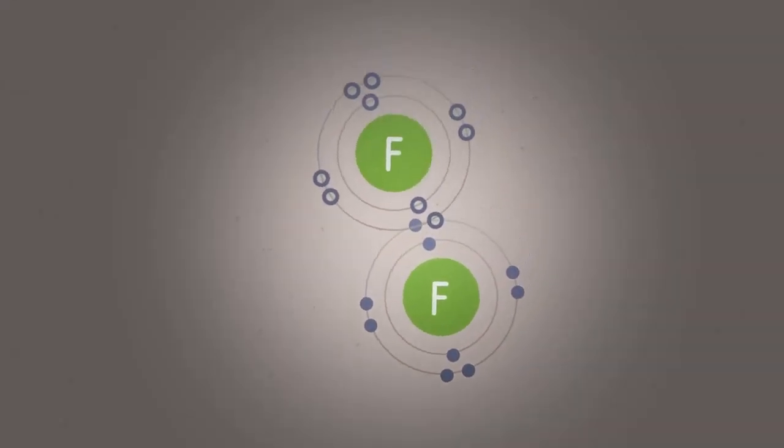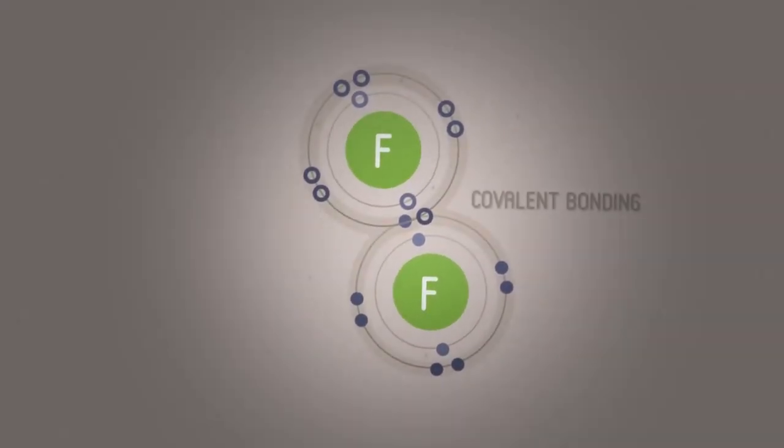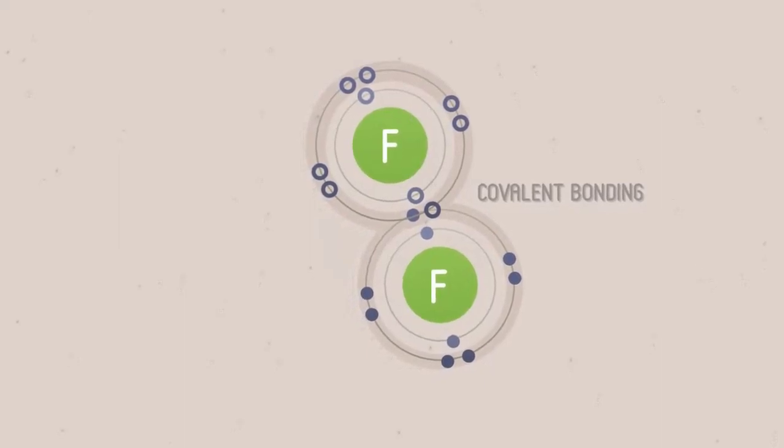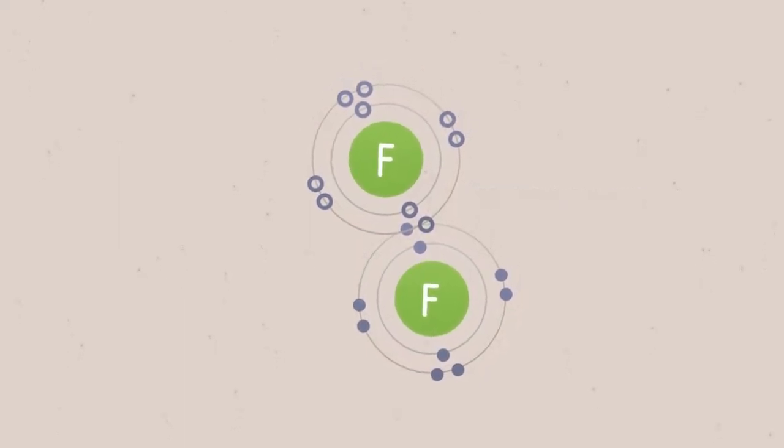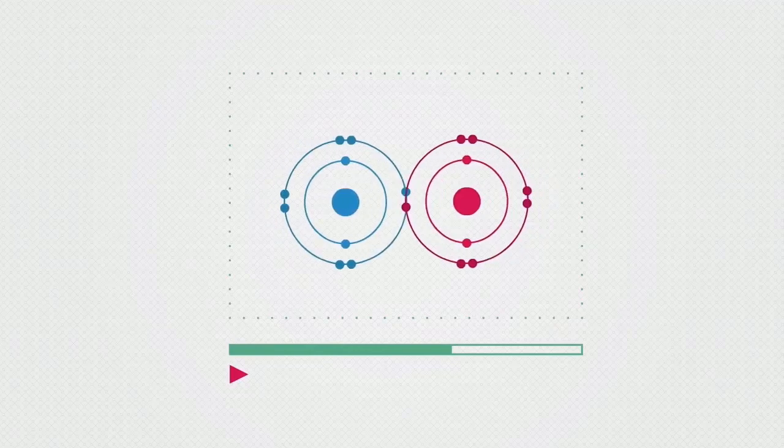So they share electrons by overlapping orbitals. This makes a bonding orbital, or covalent bond, that contains two electrons. As seen in the video, how atoms bond.